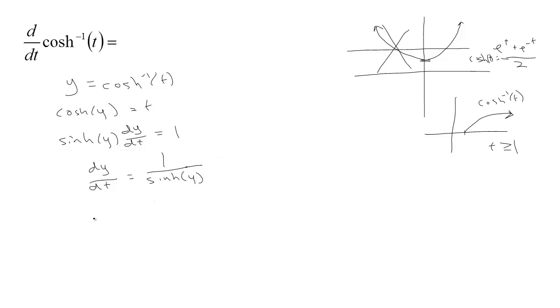And use our identity again. So, the cosh²(y) minus the sinh²(y) is 1. We have sinh of y. We want to relate it back to cosh y because we know the cosh of y is t. That's nice and simple.